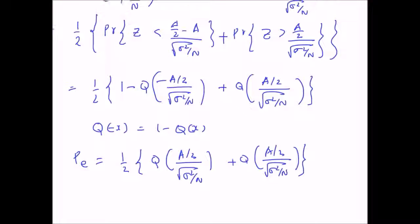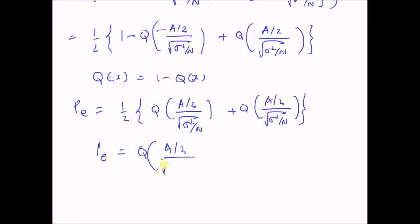Hence, the probability of error for DC level detection using the minimum probability of error detector is Pe = Q(A/2 / sqrt(σ²/N)). Thanks for watching.